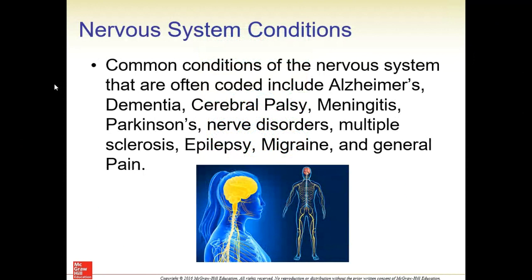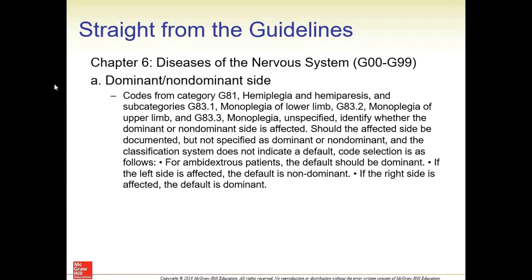So we're going to start with chapter nine, the nervous system. Different conditions coded here include Alzheimer's, cerebral palsy, meningitis or inflammation of the meninges, Parkinson's, nerve disorders, multiple sclerosis, epilepsy, migraine, and general pain — because that is a side effect of nerve stimulation.